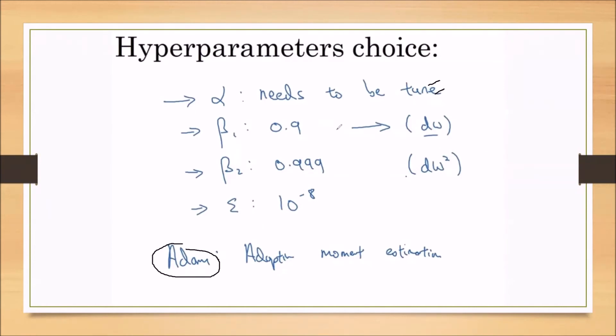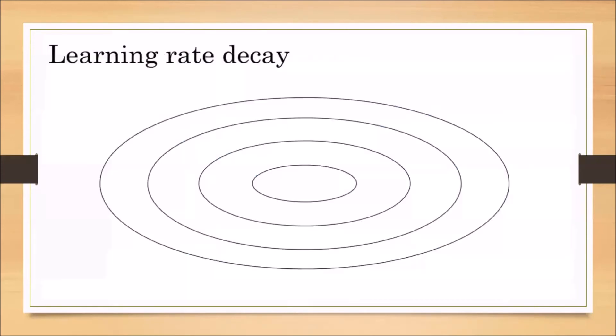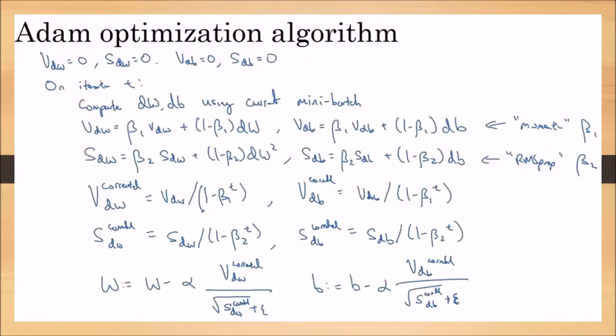Generally, in the Adam optimization algorithm, beta one value is 0.9, beta two value is 0.999, and epsilon value is 10 to the power minus 8. These beta two and epsilon values are fixed in the Adam optimization algorithm, and beta one value we generally prefer to take at 0.9. So Adam optimization algorithm gives the advantages of those two algorithms we discussed: RMS propagation and gradient descent with momentum.